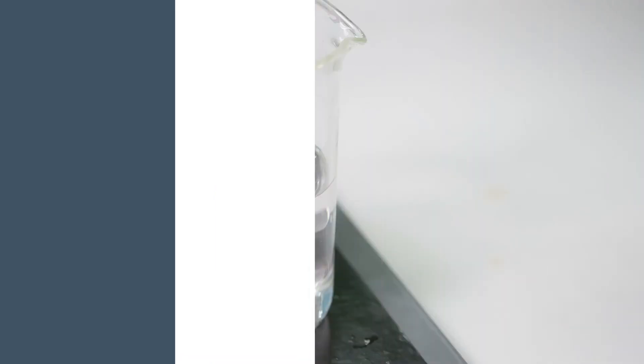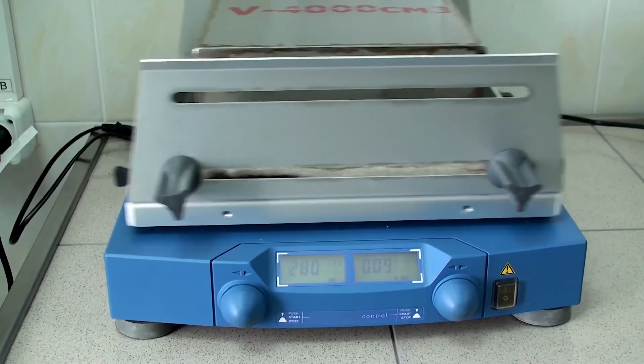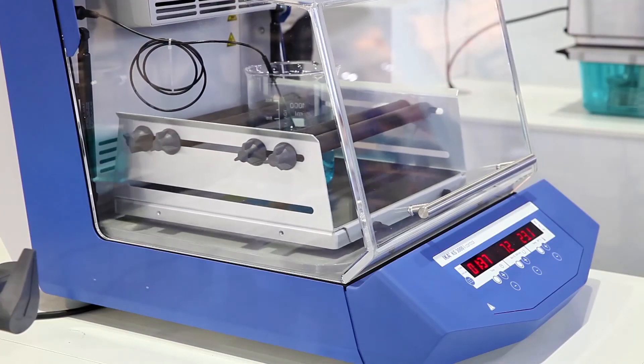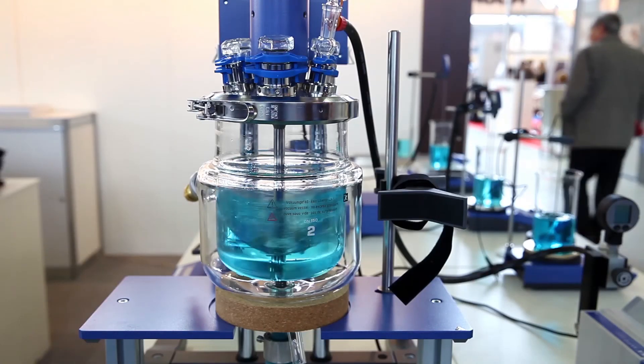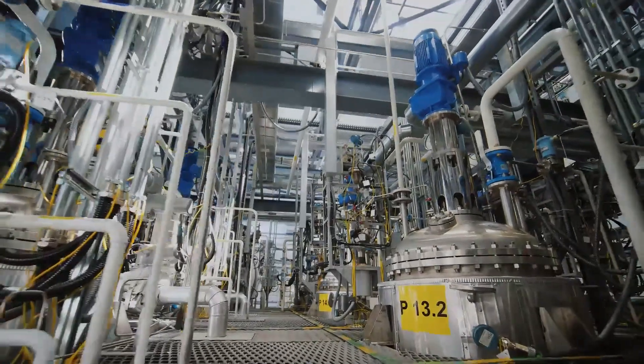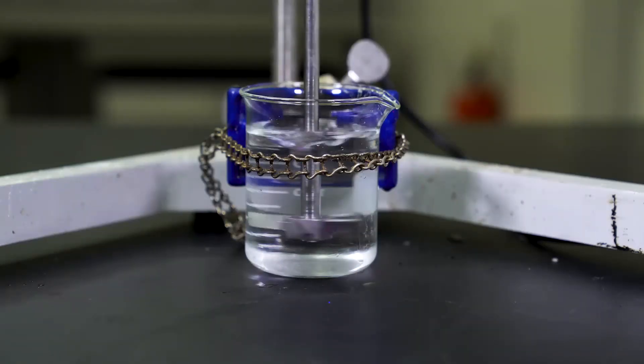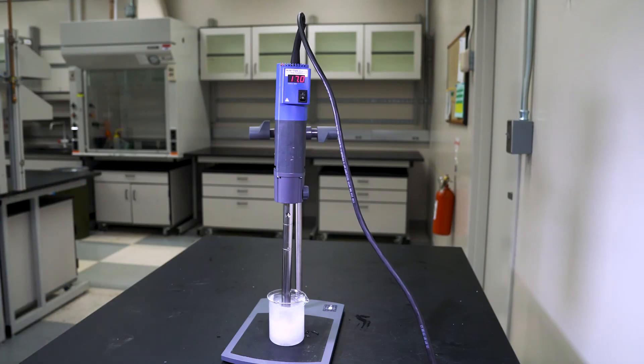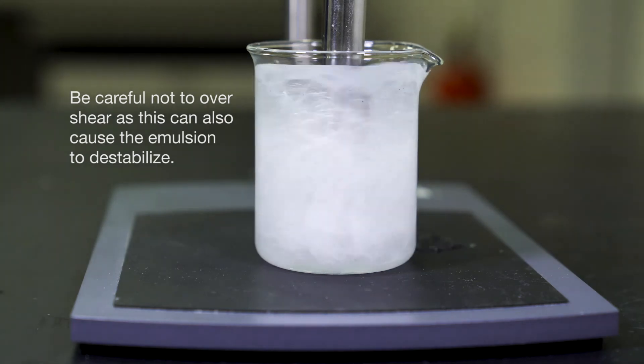You can target your particle size by using the correct shear device. For emulsions with a large particle size, you may be able to make an emulsion just using the agitator in your vessel. As you work down to smaller particle sizes, you may need specialized shear devices such as rotor stator shear devices or high pressure shear devices.